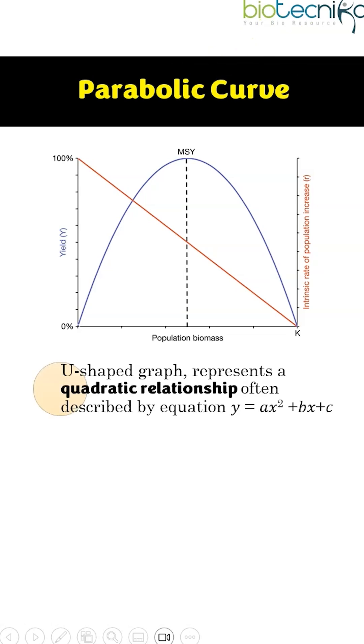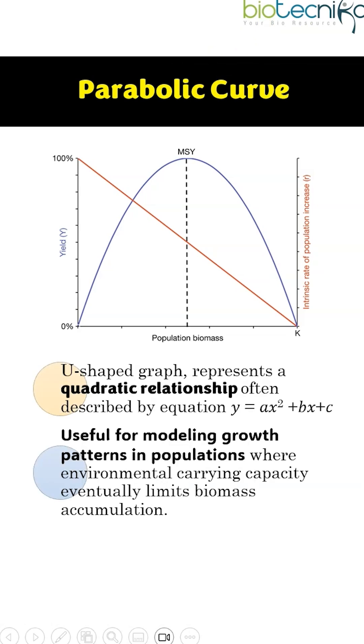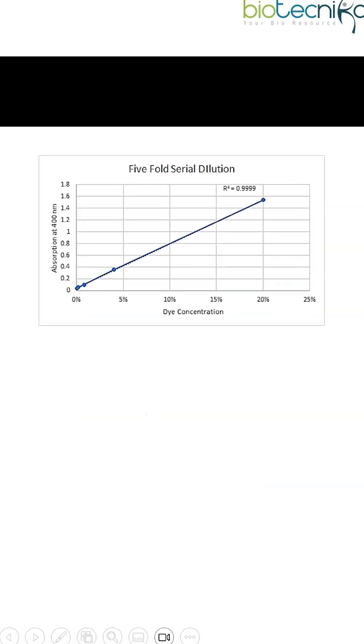Parabolic Curve. It's a U-shaped curve representing a quadratic relationship, and is useful for modeling growth patterns in populations.